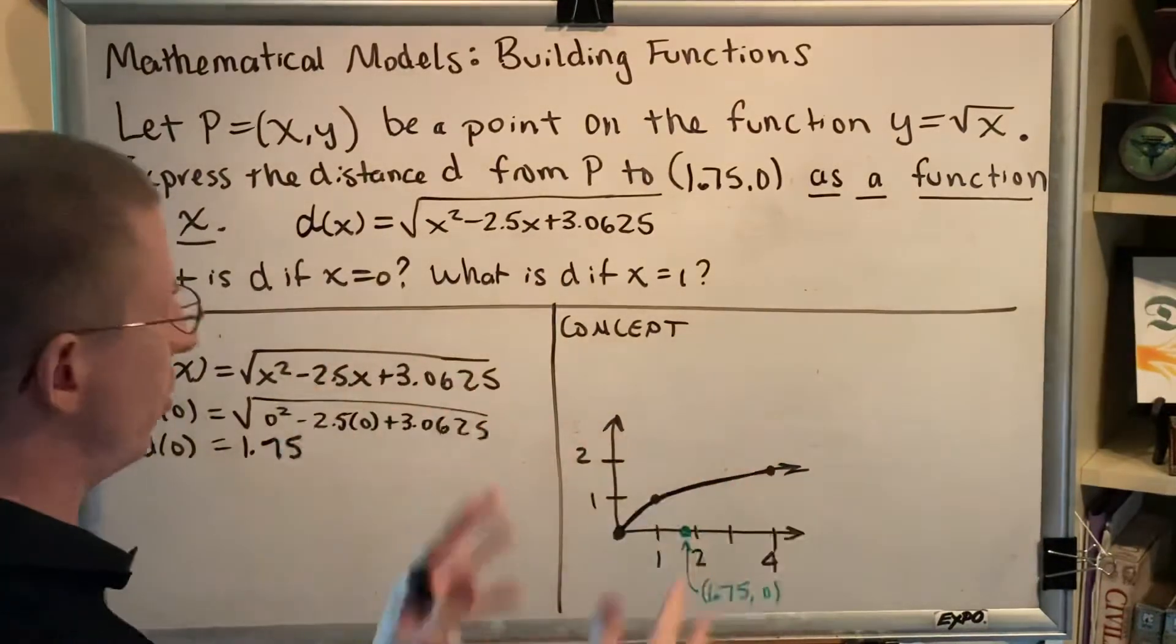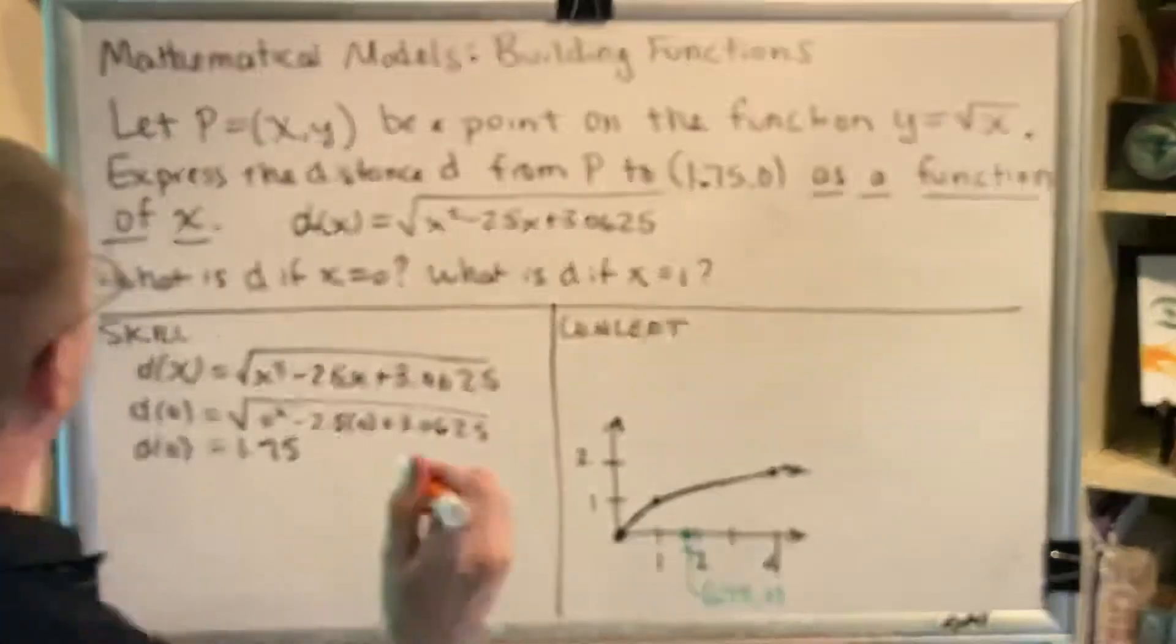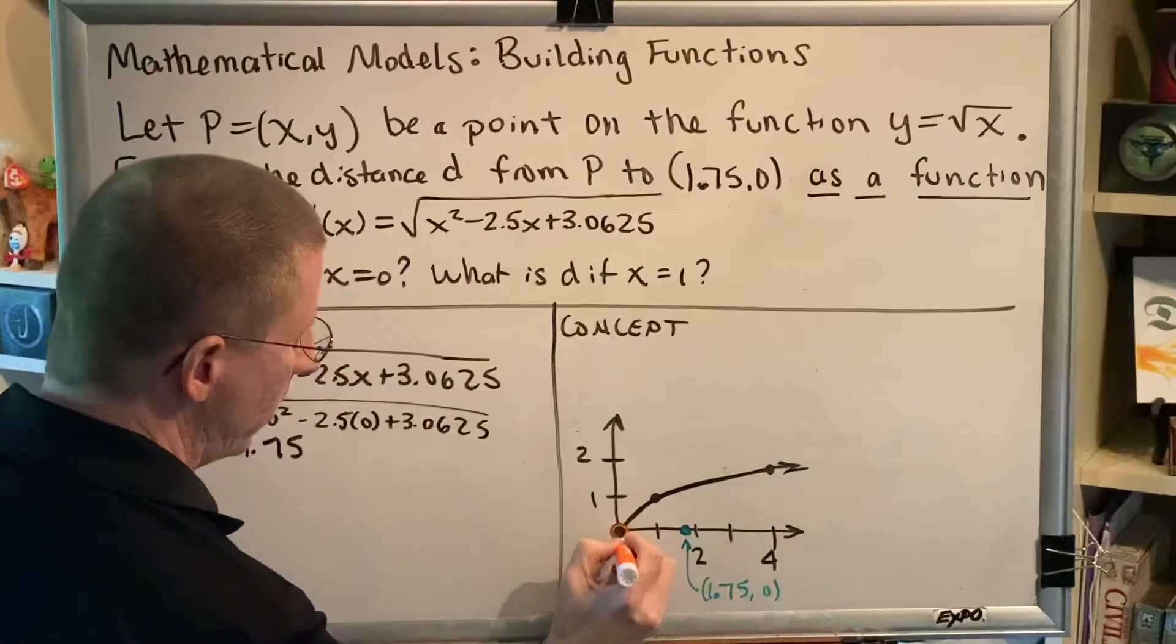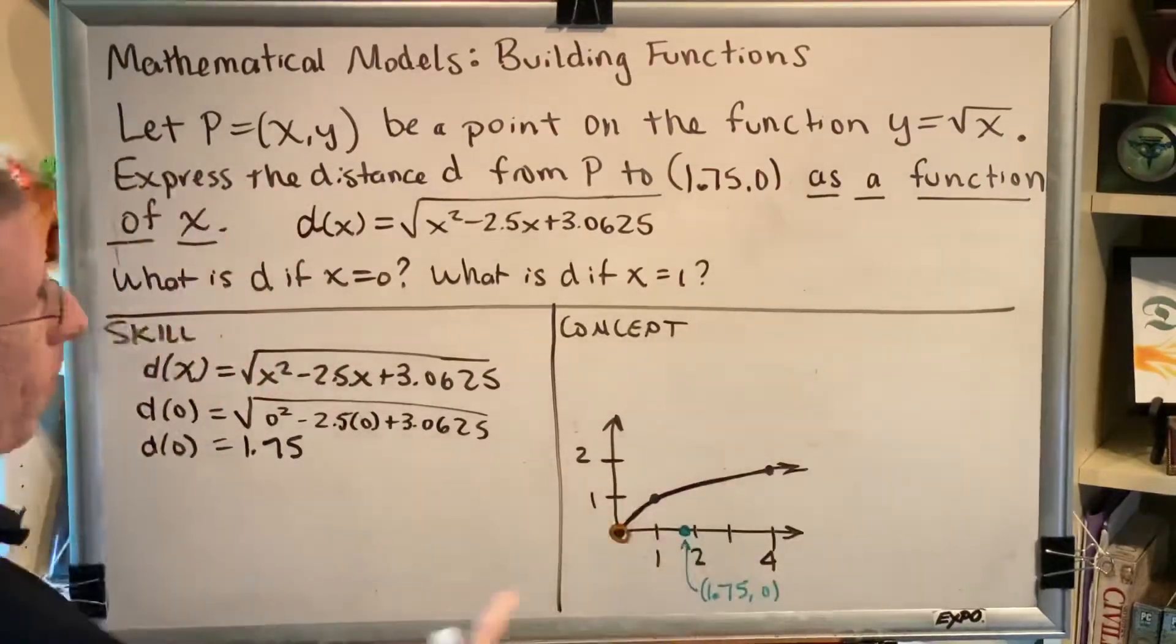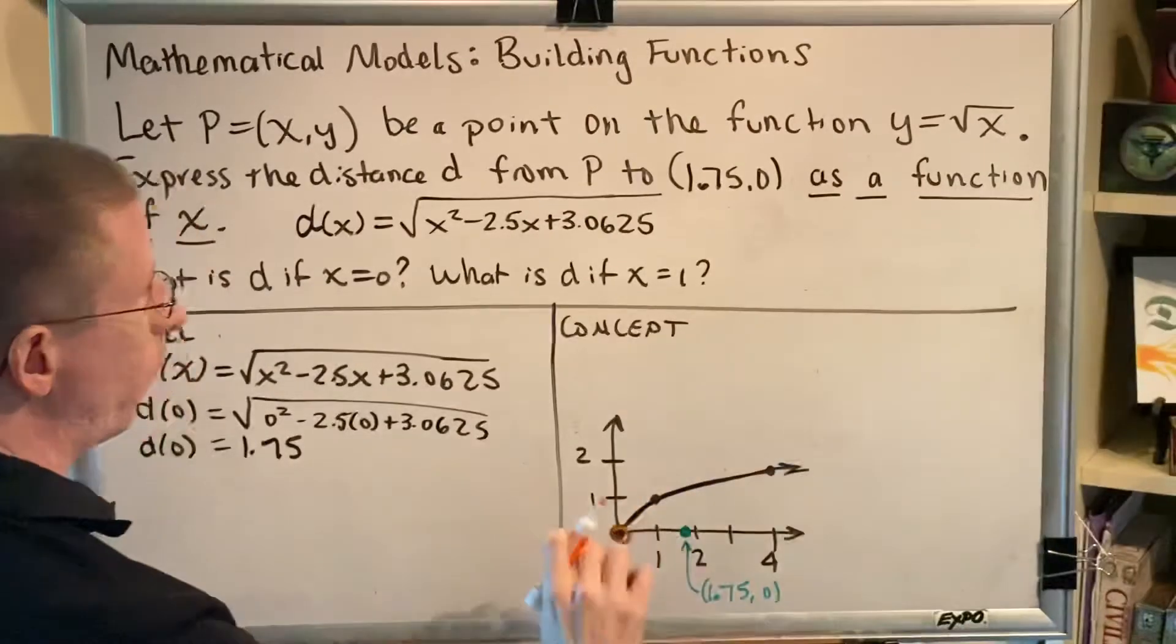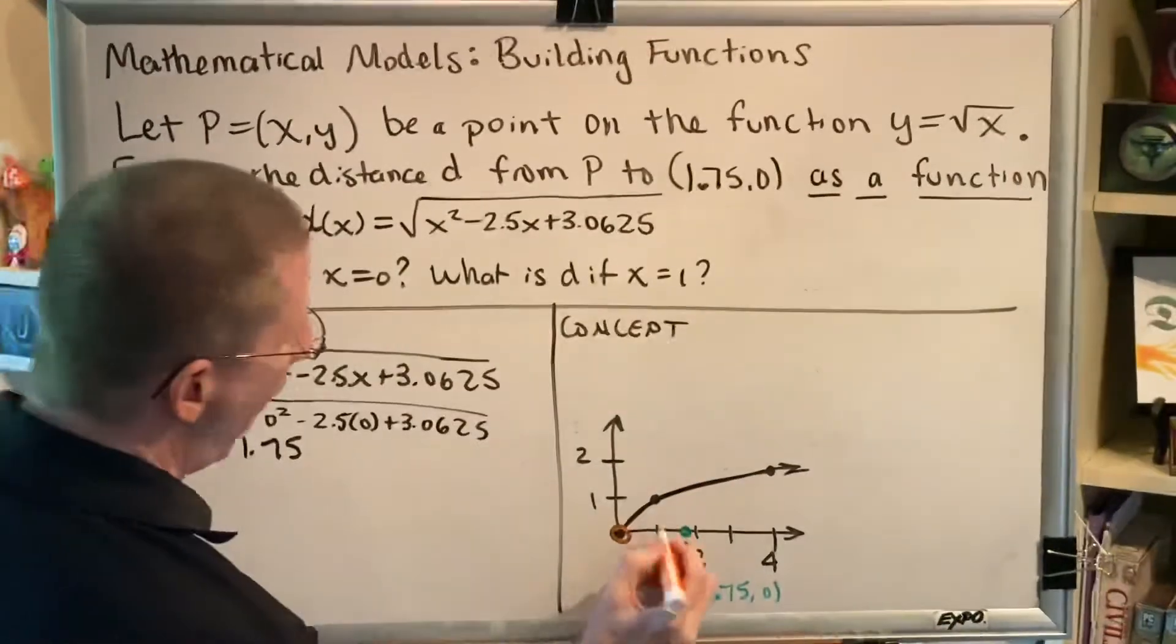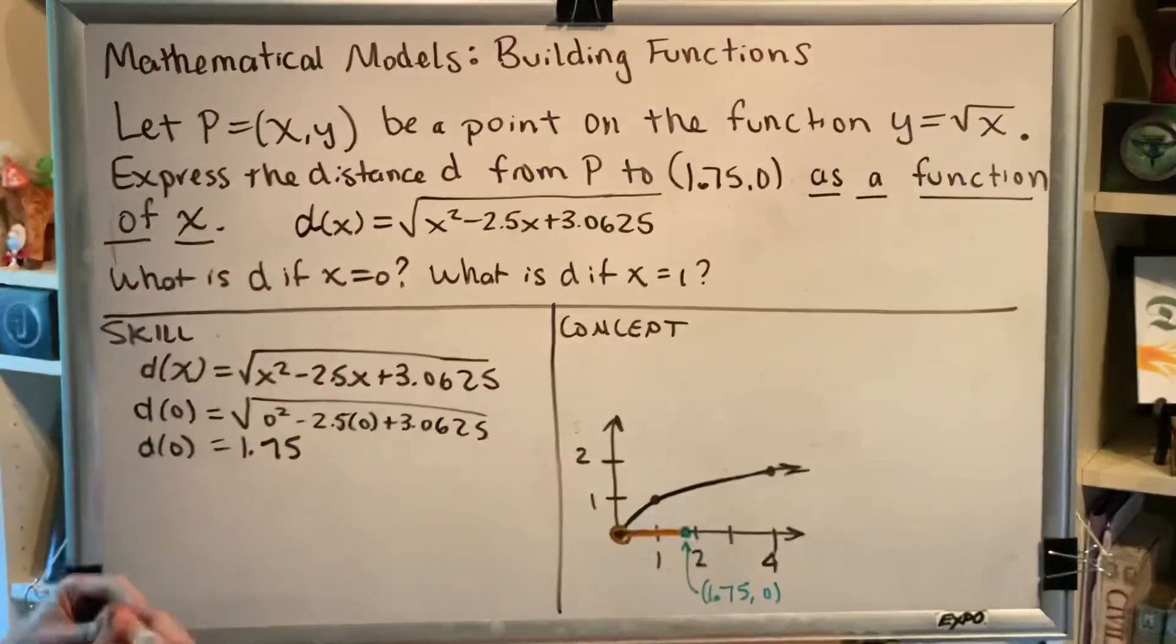Now let's turn our attention to the concept. I've kind of already started talking about it. So we've been told x is 0. So that means that this right here is the very specific point on the square root function that we're talking about. This is the only point on the square root function that has an x-coordinate of 0. And what we want to know is,